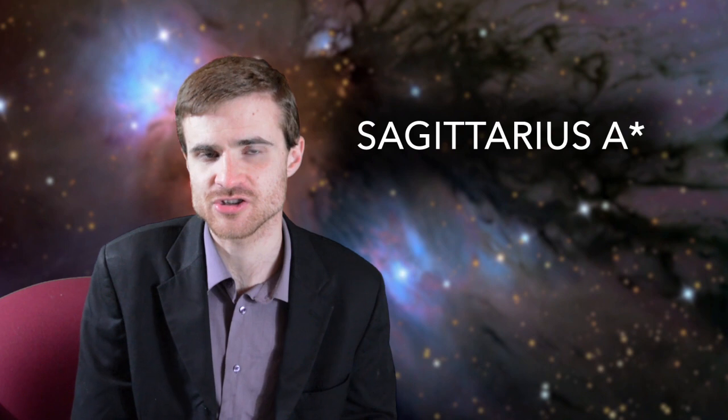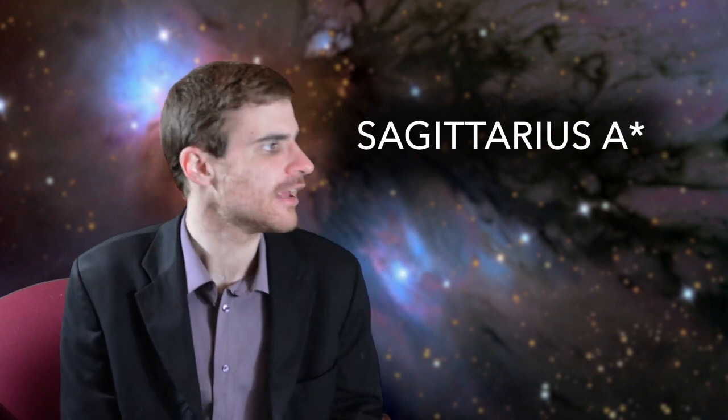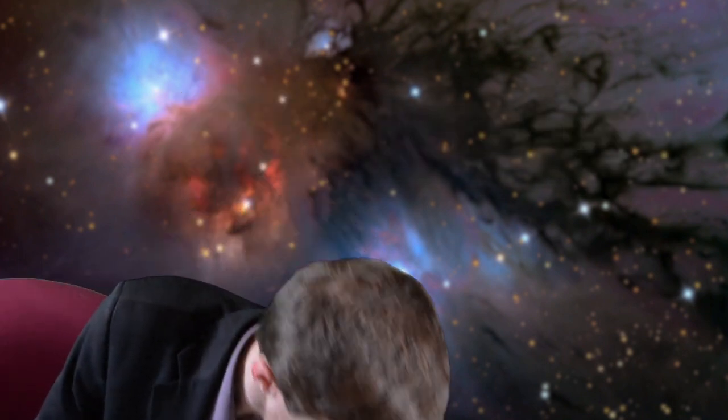We call the black hole at the center of the galaxy Sagittarius A star. Notice it looks like an asterisk at the end. It is in fact pronounced A star. For a while the galactic center was actually obscured from our view. Visible light gets trapped behind walls of dust that obscure the galactic center. It wasn't until people began doing astronomy with other wavelengths, infrared and radio, that they began to realize there was something really cool happening in the center of the galaxy.